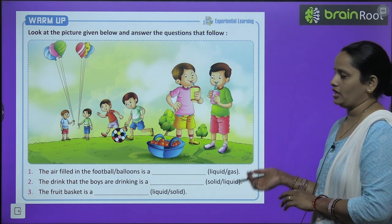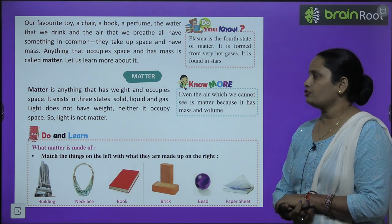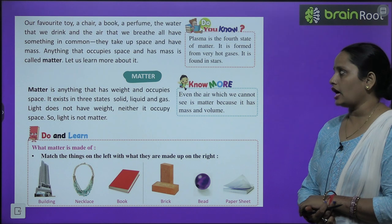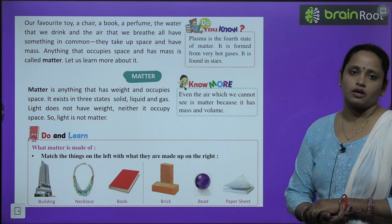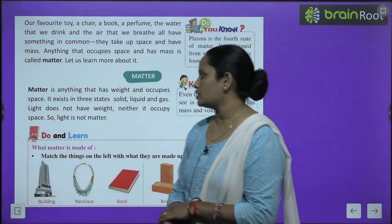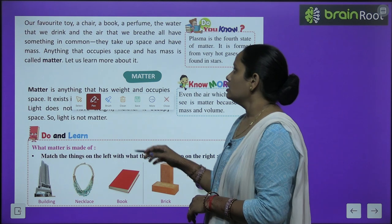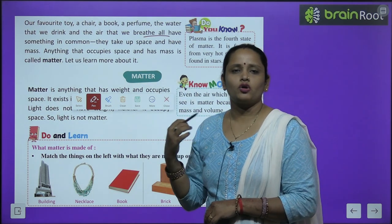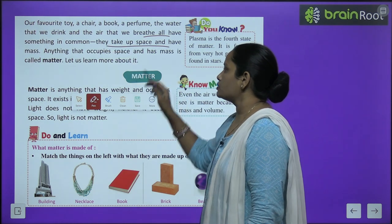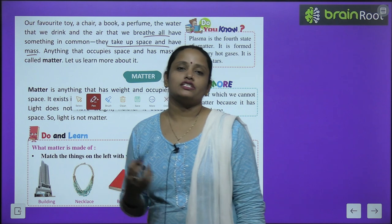Find out the answer, children, for the rest of the two questions and write it. Our favourite toy, a chair, a book, perfume, water that we drink, and the air that we breathe — all have something in common. In sub cheezon mein — jo hum khane ki cheez hain, khele ki cheez hain, peene ki cheez hain, ya phir jo hum air breathe in karte hain — sub mein kuch na kuch common hai. They take up space and have mass. Ye cheezein jagah leti hain aur inka wazan hota hai.